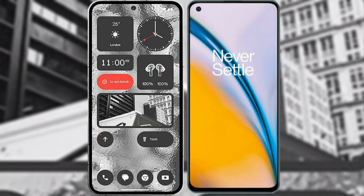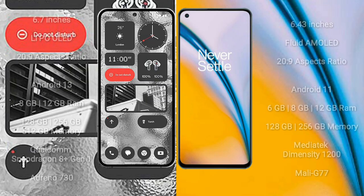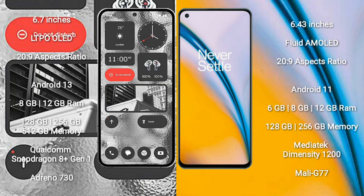I will compare the new Nothing Phone 2 with OnePlus Nord 2. Nothing Phone 2 comes with a 6.7-inch LTPO AMOLED display and Corning Gorilla Glass protection. OnePlus Nord 2 comes with a 6.43-inch flat AMOLED display and Corning Gorilla Glass protection.